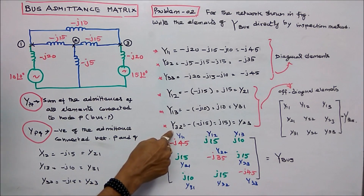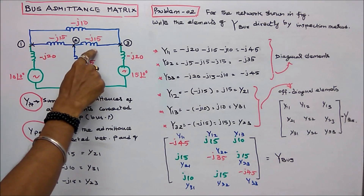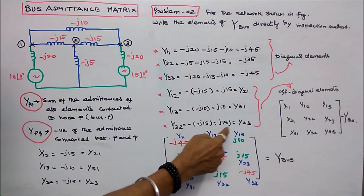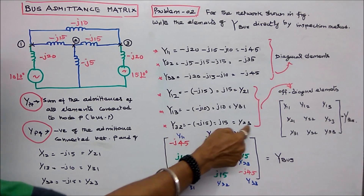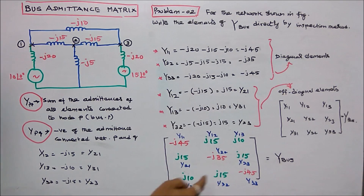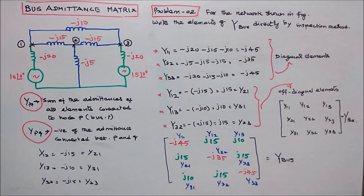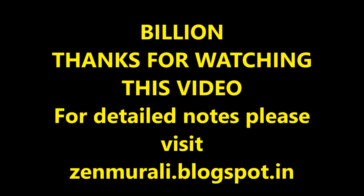Y32 equals negative of minus J15, which equals J15. So Y23 equals J15 and Y32 equals J15. This completes the Y-bus matrix for Problem 2. With this I conclude my lecture. Thanks for listening.